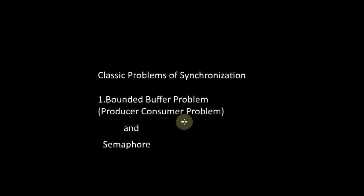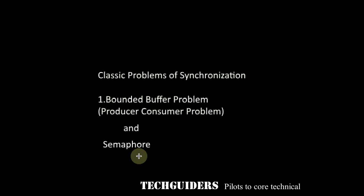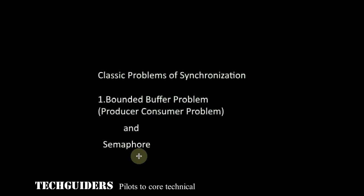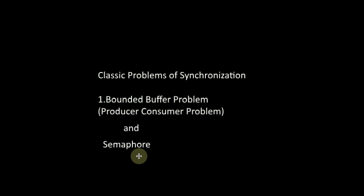One added advantage of semaphore is that it can be used not only for ensuring mutual exclusion and solving the critical section problem, but also for solving many other synchronization issues. We are going to discuss some of the classical problems of synchronization and how semaphores can be used to solve them. The first one is the bounded buffer problem, also called the producer-consumer problem.